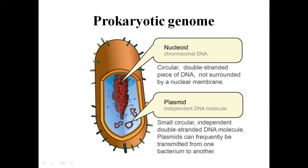Now we will see the prokaryotic genome. There are two types: chromosomal DNA and plasmid. The chromosomal DNA is otherwise called the nucleoid. It is a circular, double-stranded piece of DNA not surrounded by a nuclear membrane.